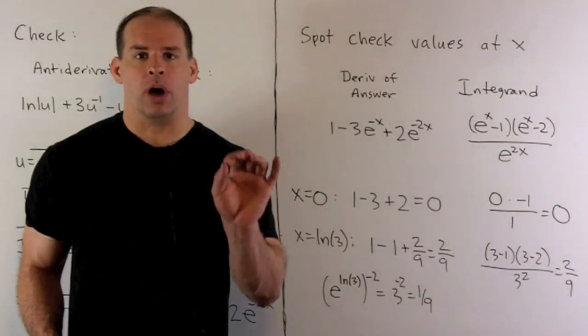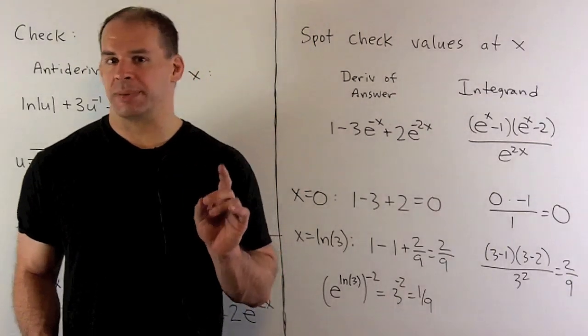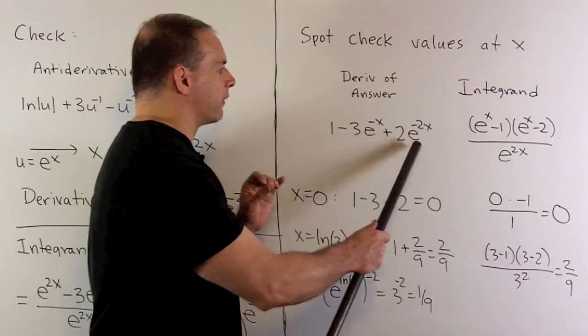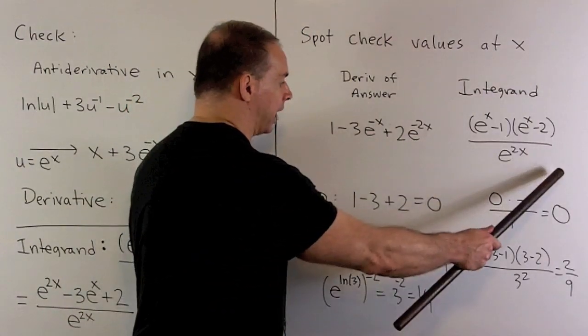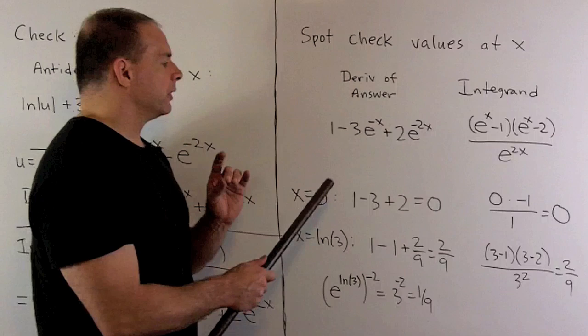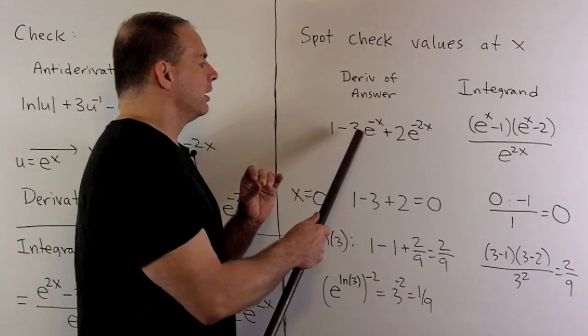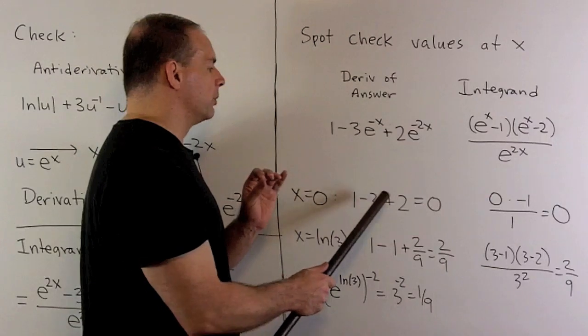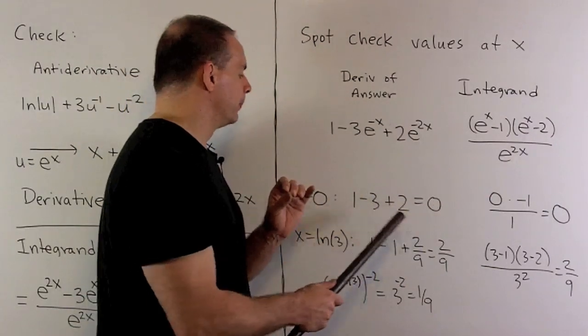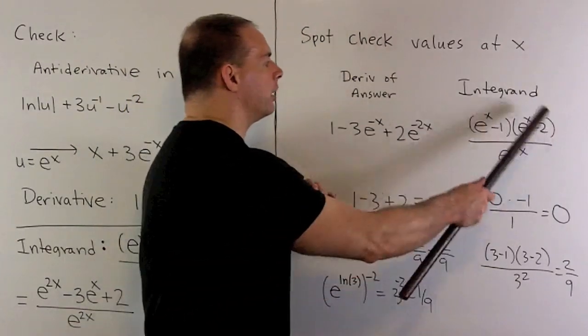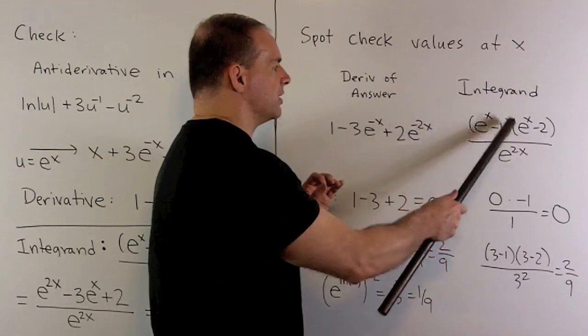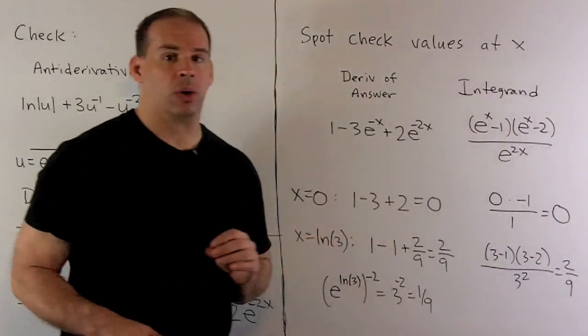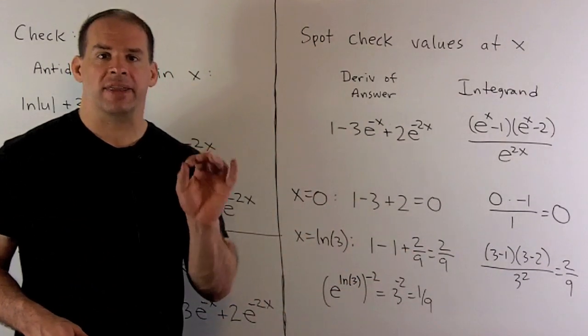Now, if we can't do all that, we can at least spot check some values. So we have the derivative of our answer, we have our integrand. If I try x equal to 0, what do we get? We have a 1, e to the 0 is always going to be 1, so I have 1 minus 3 plus 2, gives me a 0. If we put 0 into here, e to the 0 is 1, so I get a 0 here, and then we're divided by 1, so this winds up being 0 also. So we check at that point.